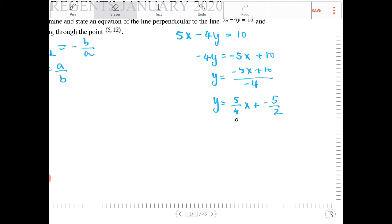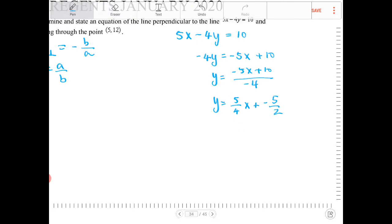So if I know the slope of the line is 5 fourths, then the line perpendicular to this given line will be the negative reciprocal of it. So it will be negative 5, I'm sorry, it will be negative 4 fifths.